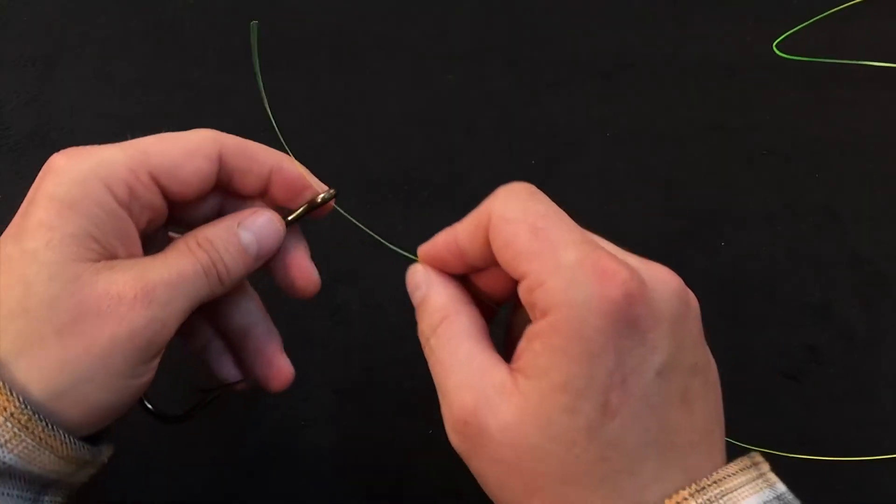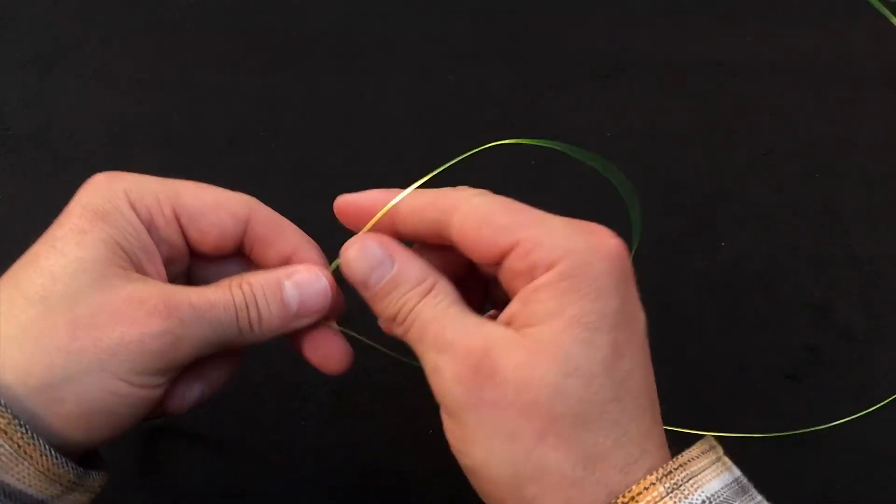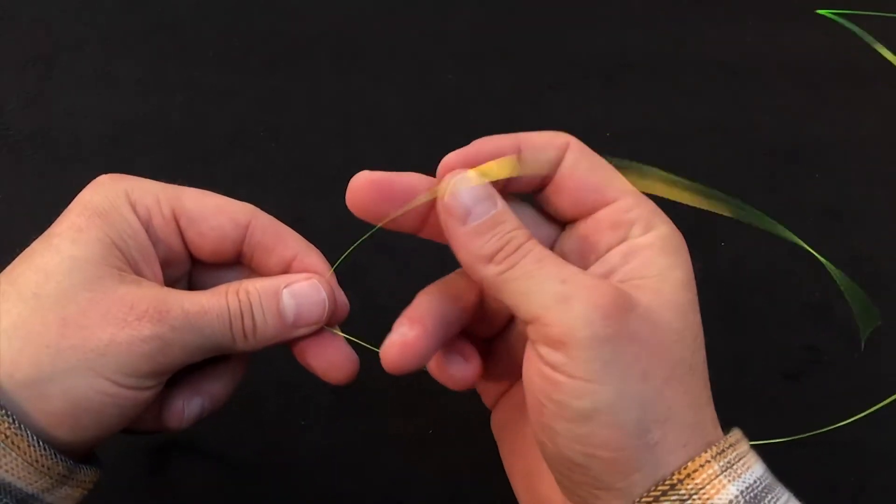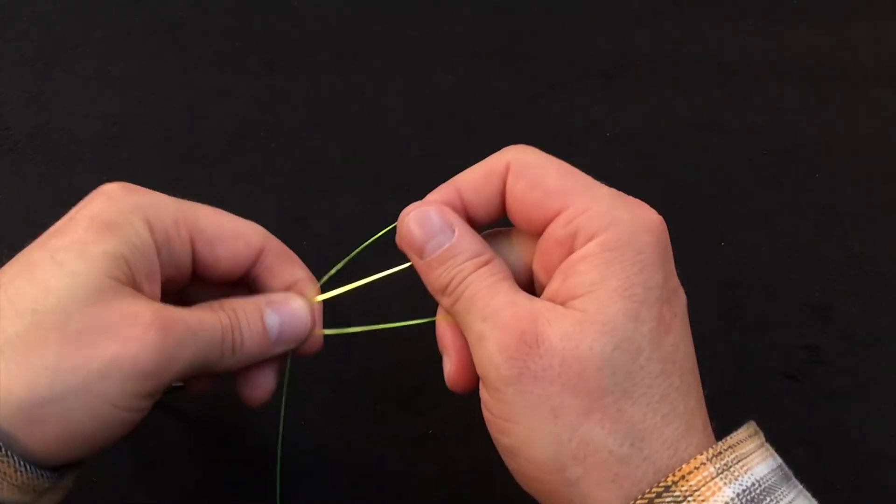To tie the knot, pass your tag end through the eye of the hook. You'll want a fairly long tag end, about 10 inches or so. Take that tag end, double it over itself and form a loop.